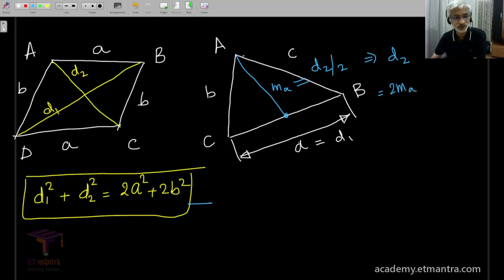And now I am just going to use this formula to get a formula for mₐ and how will this look? d₁ is nothing but A, so we have A² + 4mₐ² is equal to 2 times A² plus 2 times B².